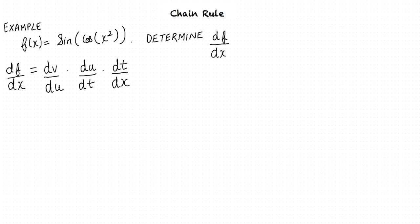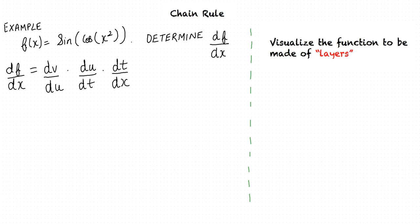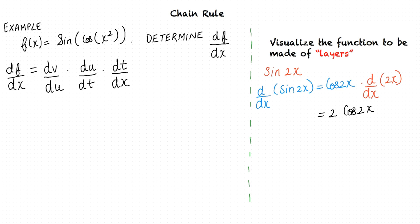We can visualize the function as being made of layers. Consider the previous example sin(2x). Sin(2x) is the outermost layer, and its derivative with respect to x is cos(2x). Once we differentiate the outermost layer, we move to the next layer, 2x. The derivative of 2x is 2, and we stop there because differentiating 2 gives 0. There are two layers, and hence two variables t and v, where t is a function of x and v is a function of t. By looking at the problem, we can identify the number of layers — we differentiate continuously until we reach a constant.